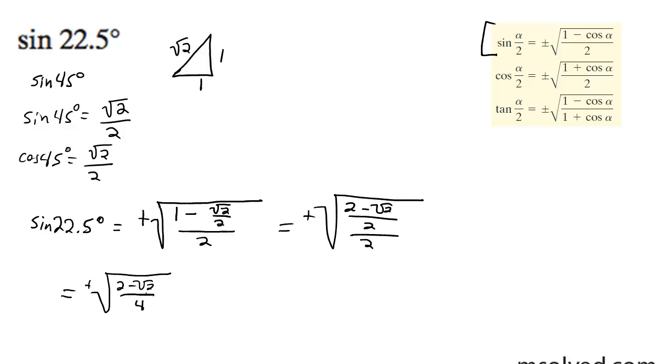And with the radical, you can have the radical on the top and bottom. You can have 2 minus root 2 over root 4, and it'll simply become this.